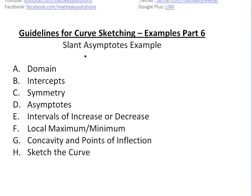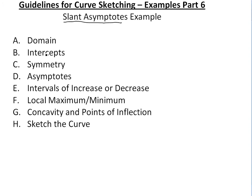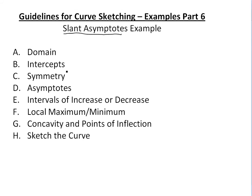It's time for another Math Easy Solution to discuss guidelines for curve sketching. This is part six of the series, and we'll look at an example that involves slant asymptotes. We briefly looked at this example in the previous video on slant asymptotes, but now we're going to graph the whole thing, starting with domain, intercept, symmetry, asymptotes, intervals of increase or decrease, local max and min, and concavity and points of inflection.